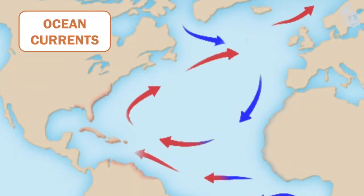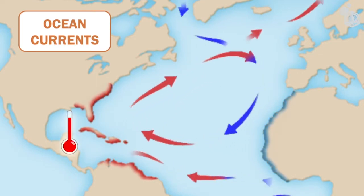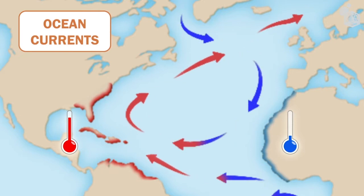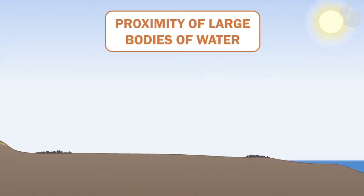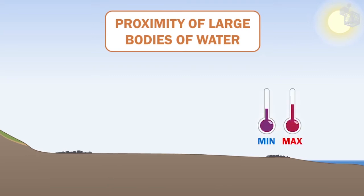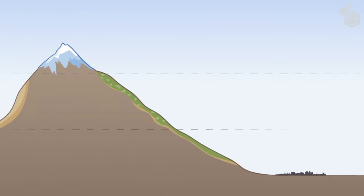The temperature of a region also depends on whether it is influenced by warm or cold ocean currents. Another factor is that regions close to oceans and large lakes have less extreme temperatures than those areas further away from large bodies of water. Finally, the higher the altitude of a region, the lower its temperature.